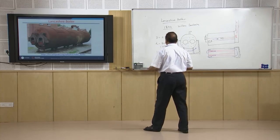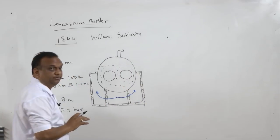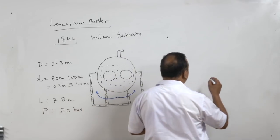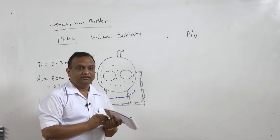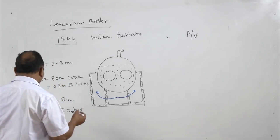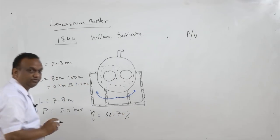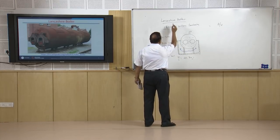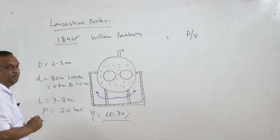There are certain features of a Lancashire boiler to mention. First, the water feed pipe is perforated in the boiler so that there is a uniform distribution of water. The heating surface area per unit volume is large, which is always beneficial as it increases the efficiency of the boiler. For this boiler the efficiency is 65 to 70 percent — not very high. Nowadays boilers have efficiency more than 90 percent, but when first fabricated in 1844, efficiency was 65 to 70 percent.